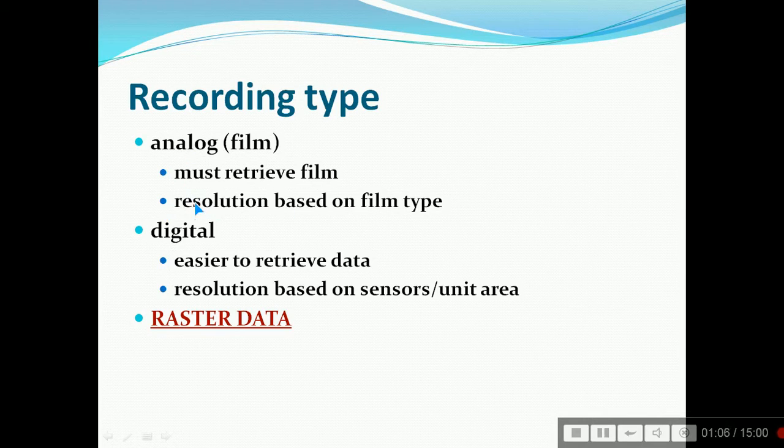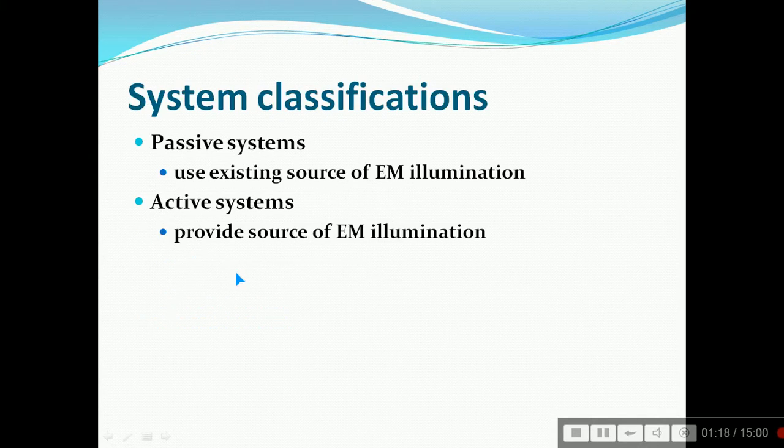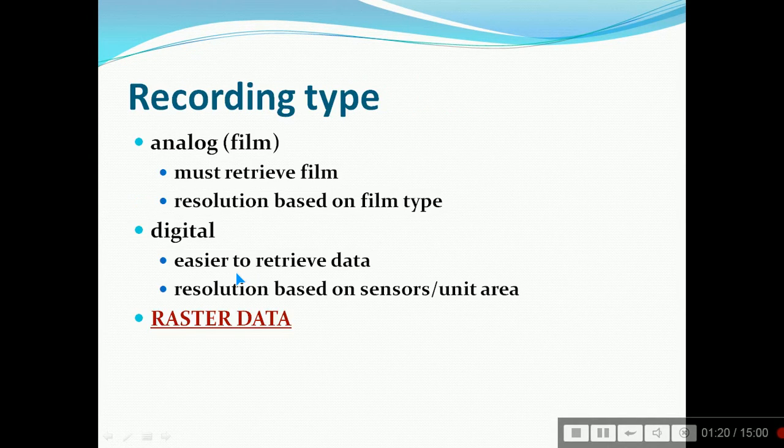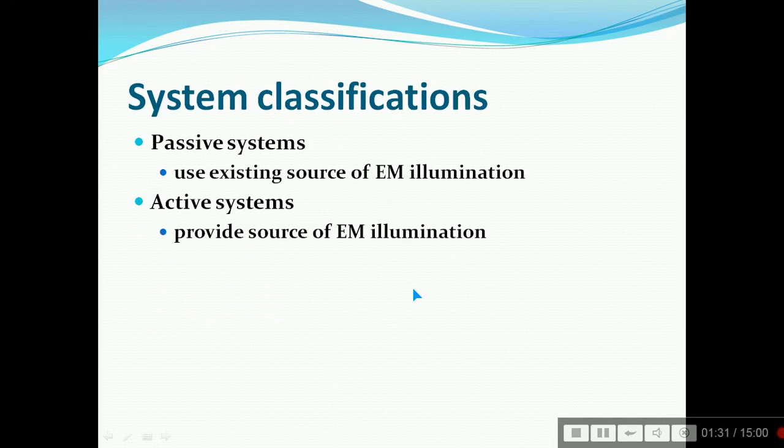The recording type criteria may be analog or digital. Analog means film must be retrieved and resolution is based on the film type. When the recording type is digital, it is easier to retrieve data and the resolution is based on sensor per unit area and raster data.